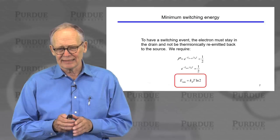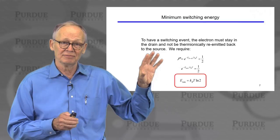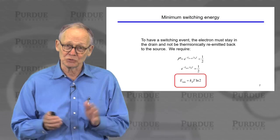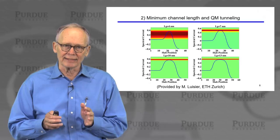We can determine what that barrier height has to be — that barrier height was the amount of energy that had to be dissipated when the electron entered the drain. Simply solving this expression, the minimum energy dissipation for a switching event is kT log 2. This is a very familiar answer that is derived in many different ways, oftentimes from thermodynamic arguments. It is a very fundamental lower limit. In practice it will take much more, but kT log 2 is the lowest it could ever be for a real switching event. That's worth remembering.